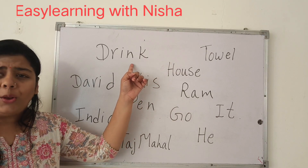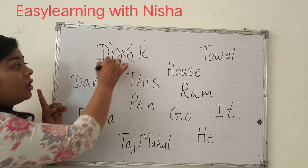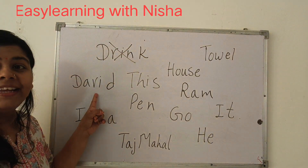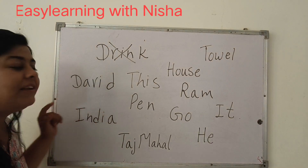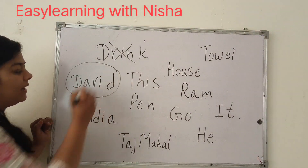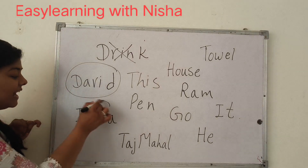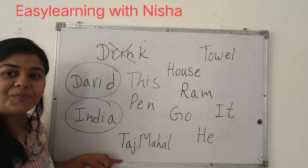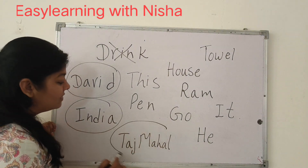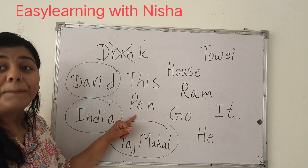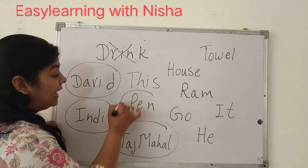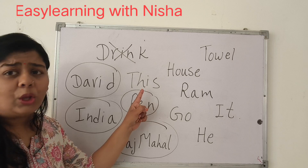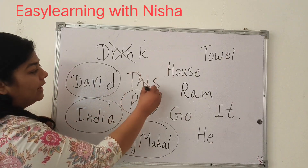What is the word 'drink'? Is drink a noun? No, it's not, because drink is not the name of a person, place, or thing. David — yes, David is the name of a person, so it's a noun. India — yes, it's a noun because it's a place. Taj Mahal — yes, it's a noun because it's a place. Pan — pan is a thing, so it's a noun. 'This' — no, it's not a noun.